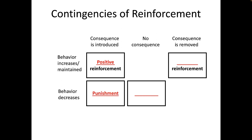The opposite of positive reinforcement is punishment, which involves introducing a consequence that decreases behavior. Examples include losing a bonus for missing work, or a child being grounded for coming in too late. When the punishment is established, hopefully the behavior decreases — the child comes home on time. In the world of work, we can take away bonuses, dock pay, send people home, or write them up, all with the desire of decreasing undesirable employee behavior.